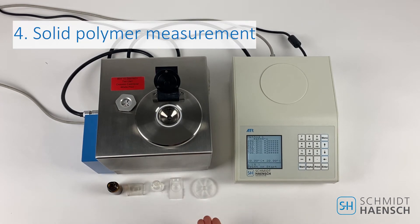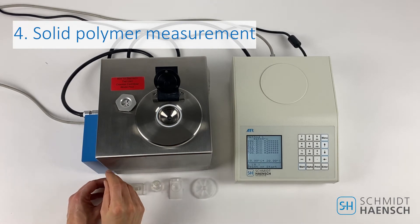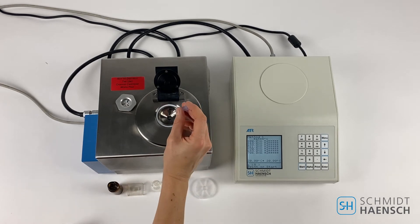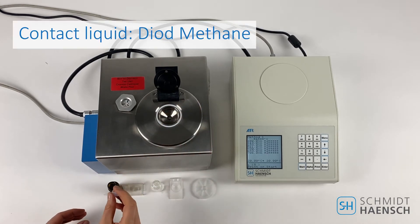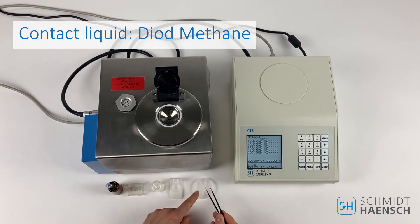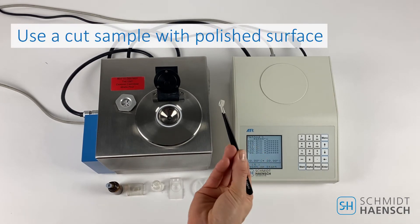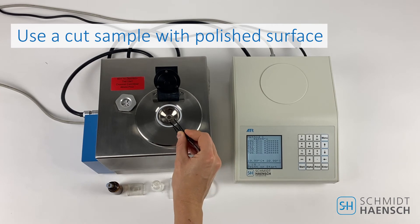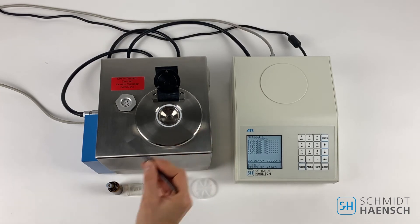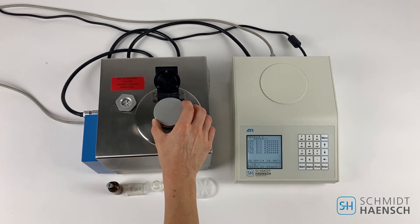We will show how to measure a solid polymer sample on our refractometer. Apply diode methane to contact the sample to the prism surface. Put a cut sample with a polished surface onto the measuring surface. Close the lid.